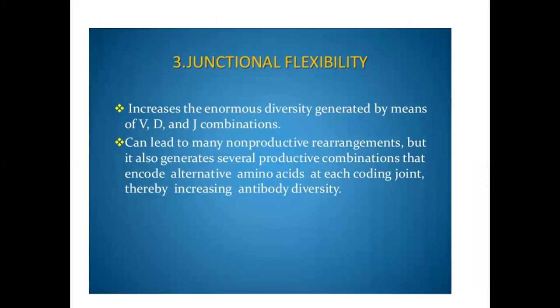The next mechanism is junctional flexibility. Out-of-phase and in-phase joining increases the enormous diversity generated by V, D, and J combinations. While it can lead to many non-productive rearrangements, it also generates several productive combinations, encoding alternative amino acids at each coding joint, thereby increasing antibody diversity.